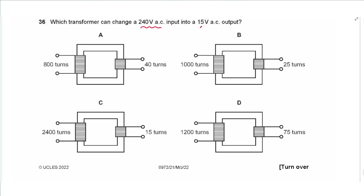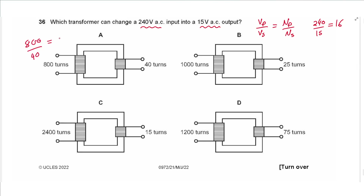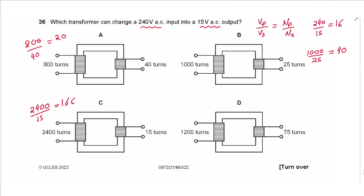Question 36: Which transformer converts 240 V AC to 15 V AC? Using Vp/Vs = Np/Ns: 240/15 = 16. Checking the turn ratios — option D has 1200/75 = 16, which matches. The answer is D.